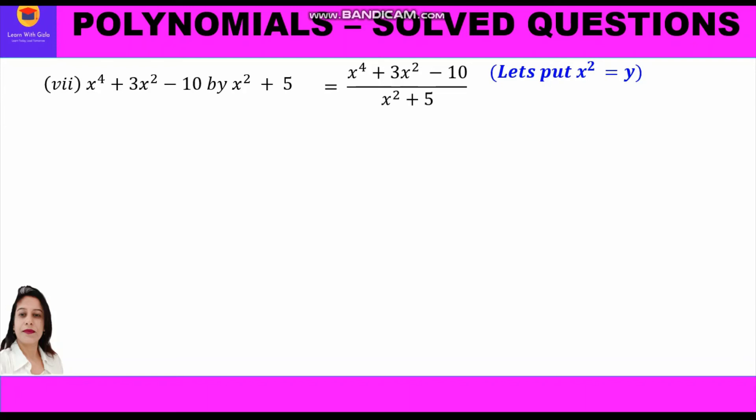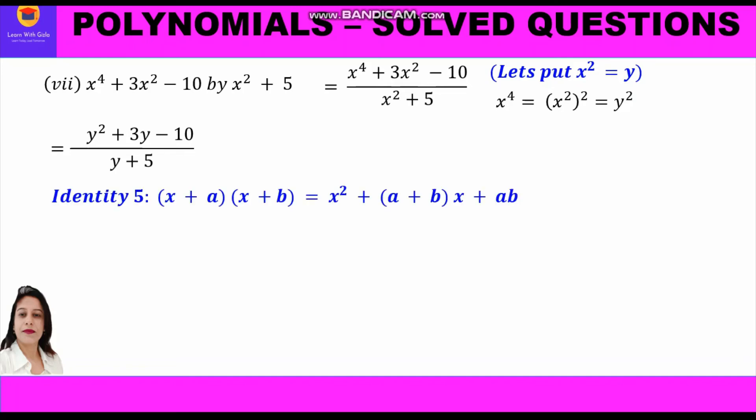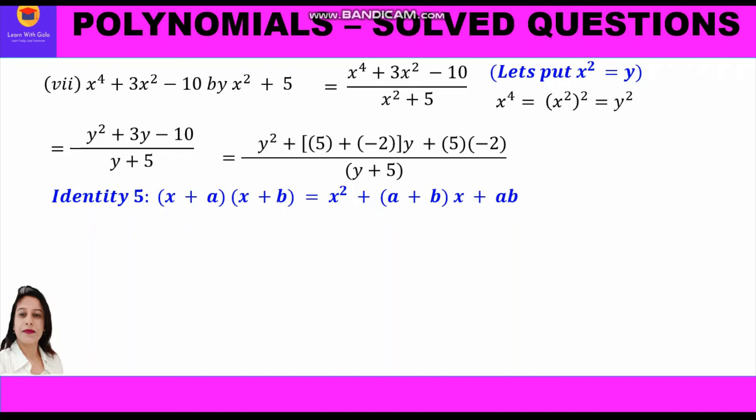Let's put x squared equal to y in both the numerator and denominator. We can write x⁴ as (x²)², and replacing x² with y gives y². Accordingly we write (y² + 3y − 10) upon (y + 5). Now we solve the numerator using identity 5: (x+a)(x+b) = x² + (a+b)x + ab. We need two numbers whose sum is 3 and product is minus 10.